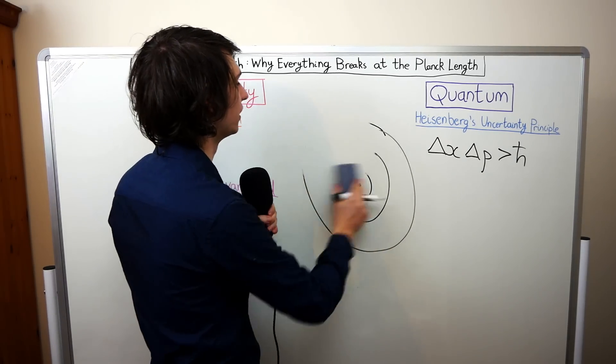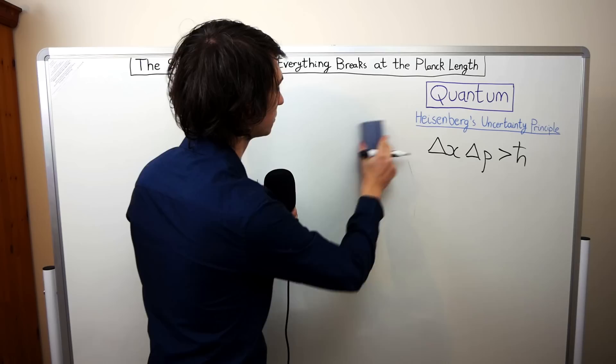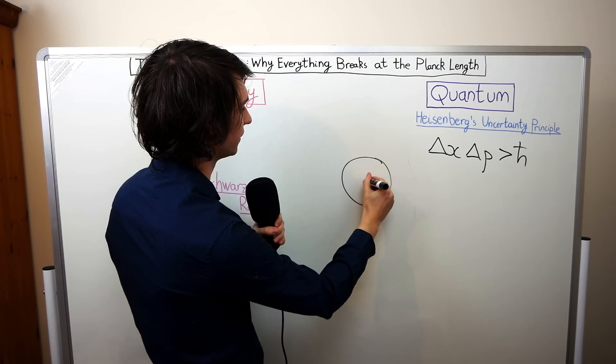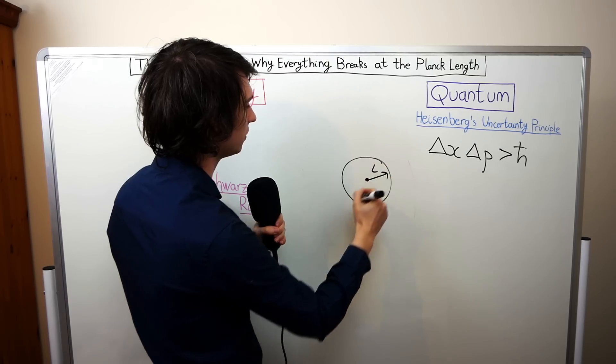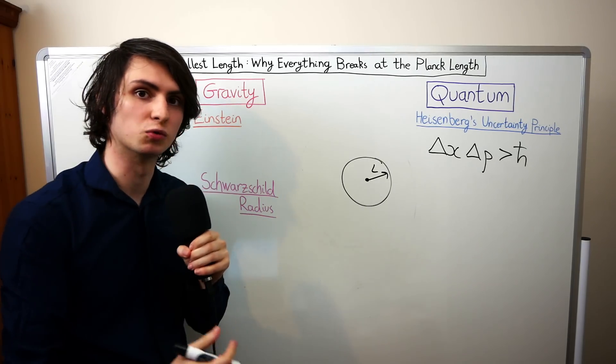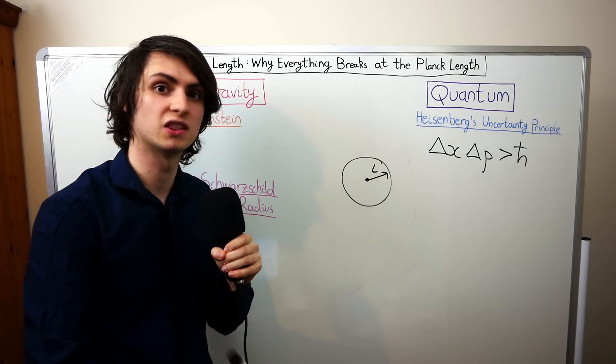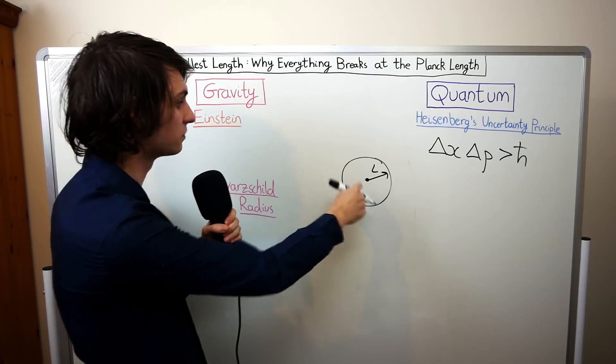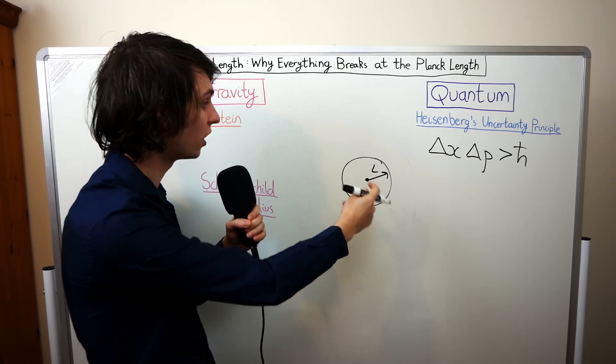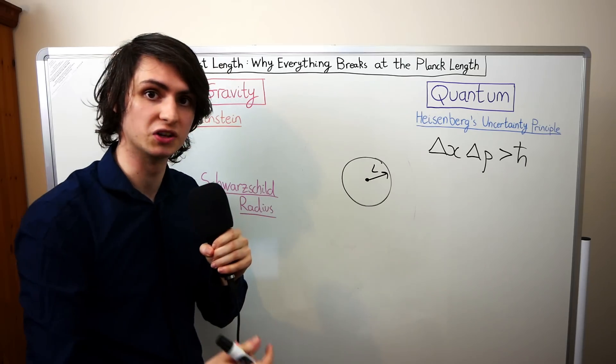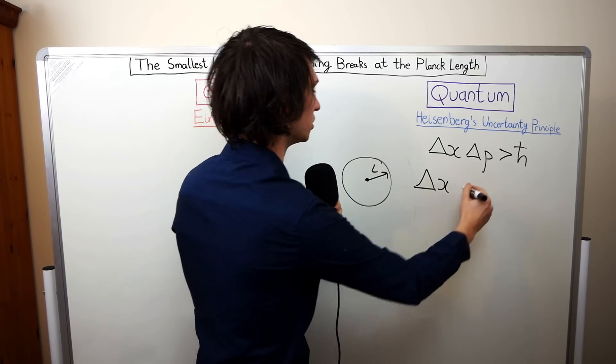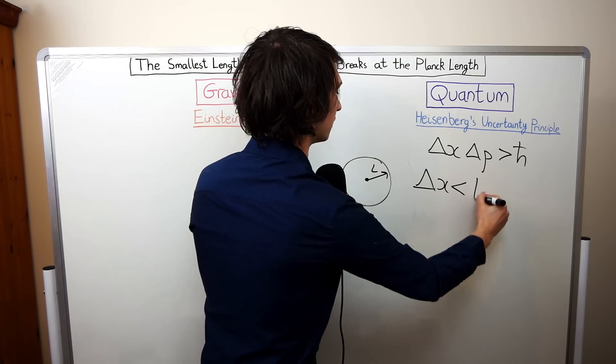Suppose that we want to consider a particle in some small region with size L. So here's my region. It's got size L and we want to consider a particle just in this region. Well if I want to consider this small region then I need the uncertainty in the position of the particle to be smaller than this L. If the uncertainty was larger than L then the particle could be found outside this small region. So what I need is the uncertainty in the position of the particle to be smaller than this length L.